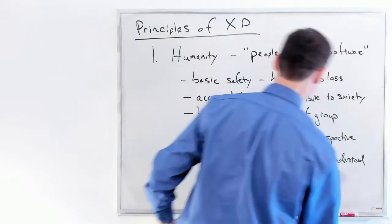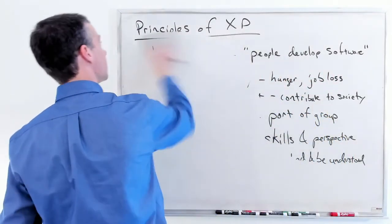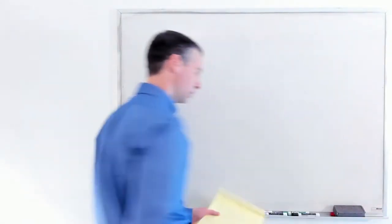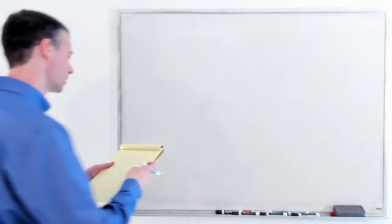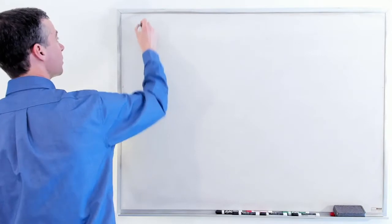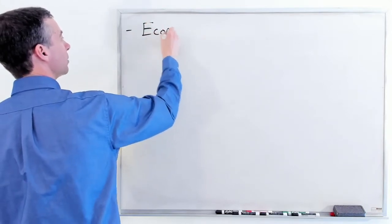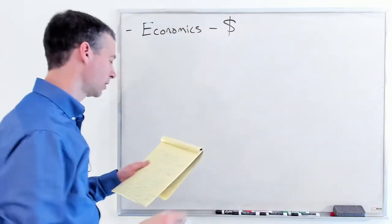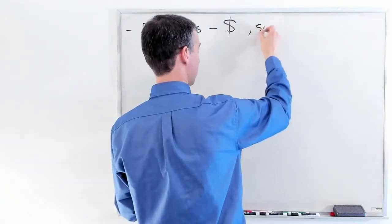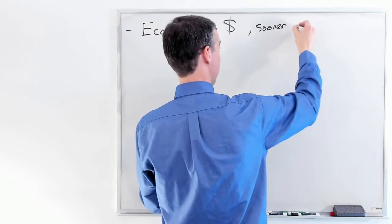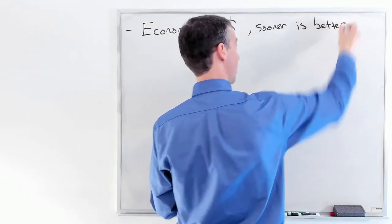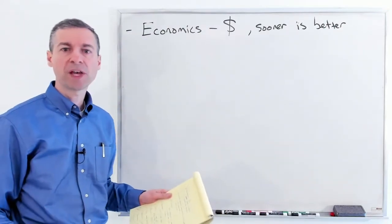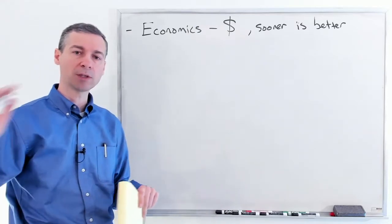Next on the list is economics. Money does matter in software, and perhaps the biggest principle here is sooner is better. You get that software out there, it starts making money. Time to delivery is really important, so we need methods that allow us to get software done quickly and get value out to customers really quickly.